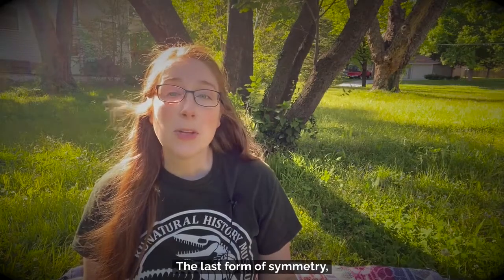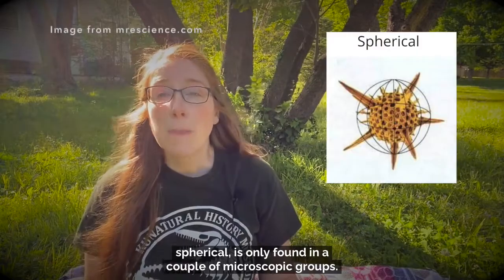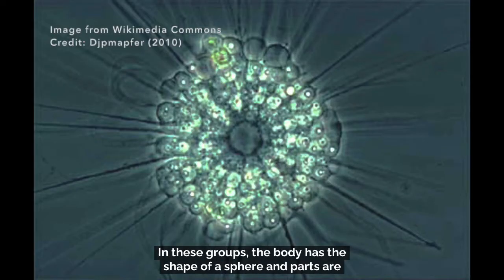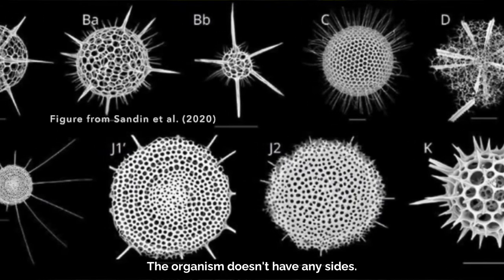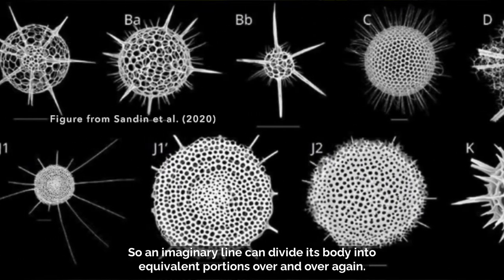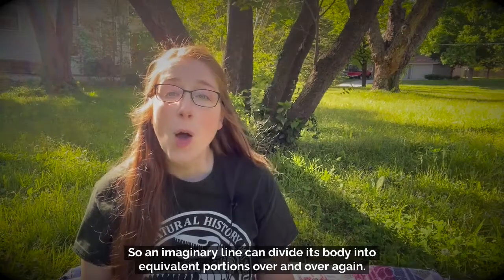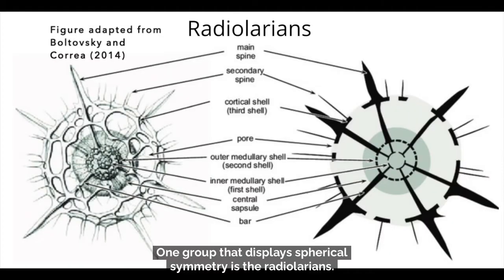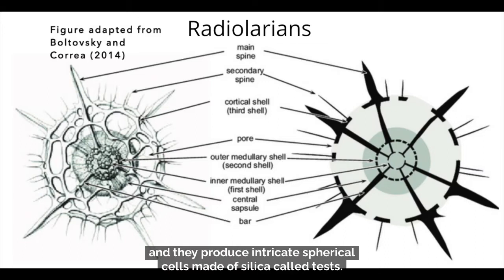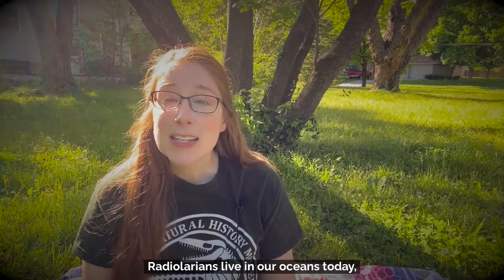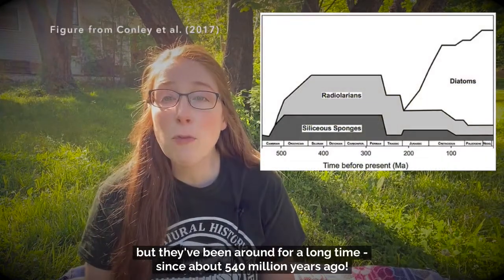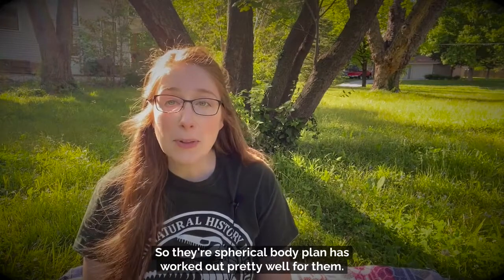The last form of symmetry, spherical, is only found in a couple of microscopic groups. In these groups, the body has the shape of a sphere and parts are arranged concentrically such that they radiate out from the center. The organism doesn't have any sides, so an imaginary line can divide its body into equivalent portions over and over again. One group that displays spherical symmetry is the radiolarians — tiny zooplankton that live in the ocean. They produce intricate spherical cells made of silica called tests, which can be really beautiful to observe under a microscope. Radiolarians live in our oceans today, but they've been around for a long time, since about 540 million years ago, so their spherical body plan has worked out pretty well for them.